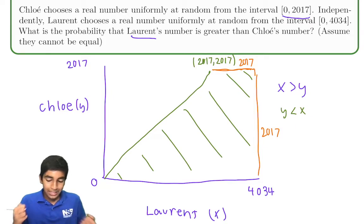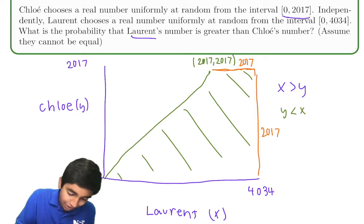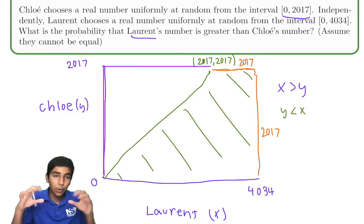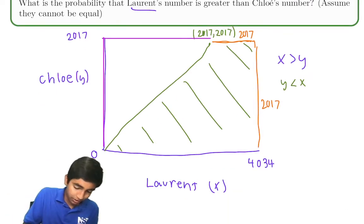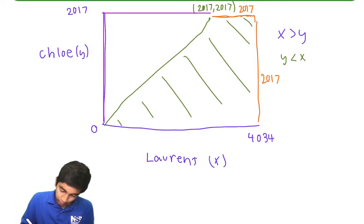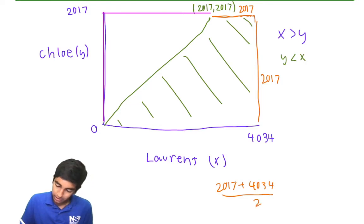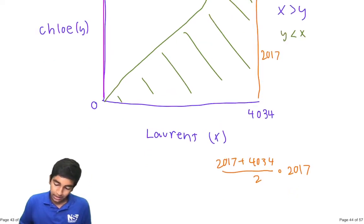So, now, what's the probability that Laurent's number is bigger? It's just the area of this trapezoid divided by the area of the rectangle. Because this rectangle represents all regions. And this trapezoid is just the regions where Laurent's number is bigger. So, what is the area of the trapezoid? We use the formula. 2017 plus 4034 divided by 2 times 2017. And that's over the area of the entire rectangle. 2017 times 4034. These cancel.